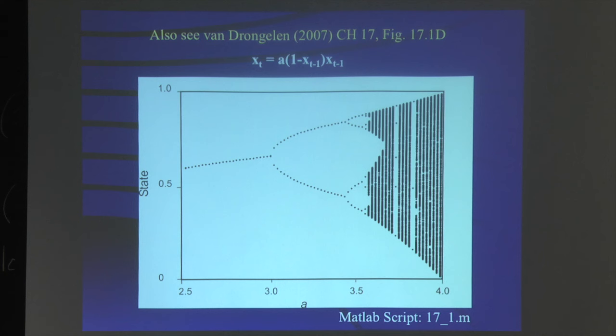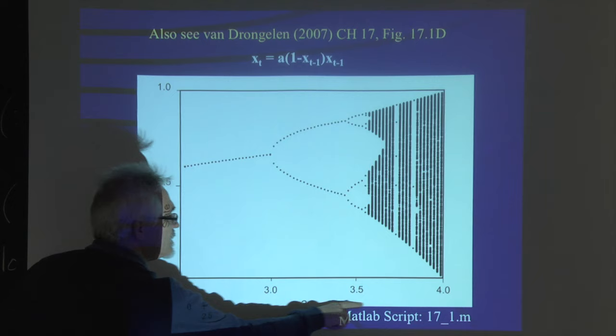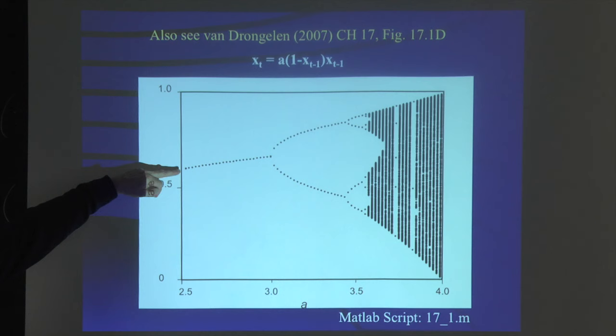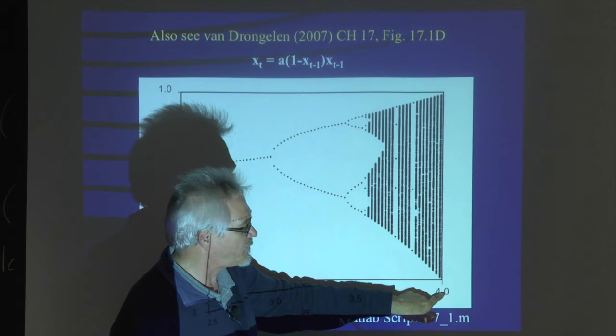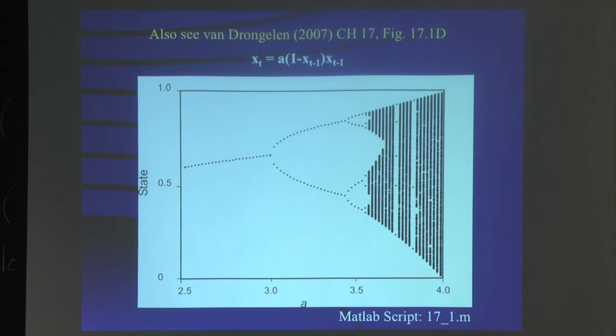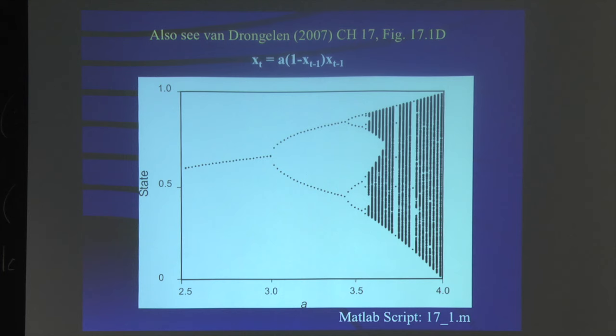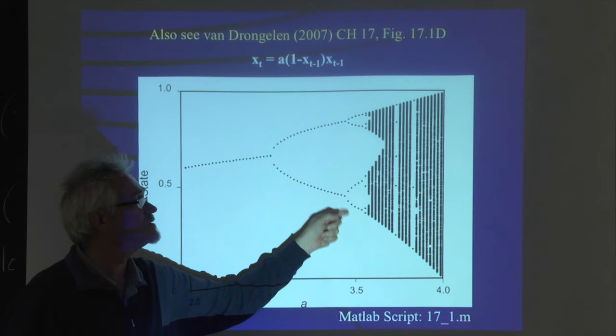You can vary A over a range of values, which is shown in the Feigenbaum diagram — named because Feigenbaum was the first to describe it. As A increases, the system settles to one state, then oscillates between two states, then four states, and pretty much by the time you get close to four, you have an infinite number of states — chaos. This is the period doubling route to chaos: from a single state to two states to four states, eventually ending in chaos.